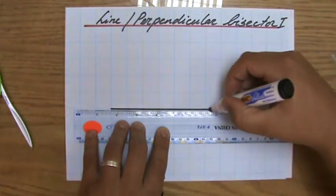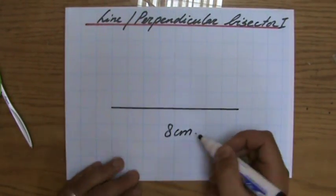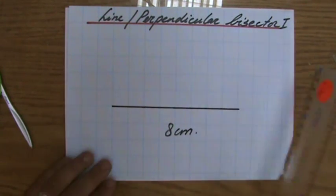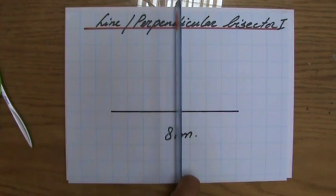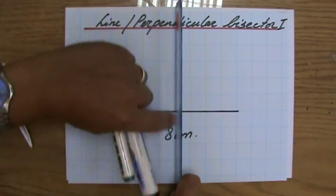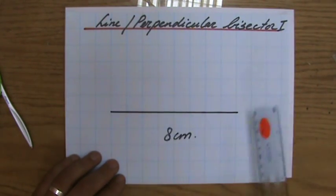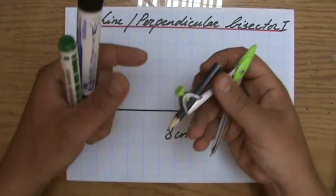So the line bisector, dividing the line into two equal parts, will be exactly in the middle. That's why we also call it a perpendicular bisector, because the line bisector is perpendicular to the line you are bisecting. But I cannot just draw this line here perpendicular to the 8 centimeters. No, I have to use my compass.